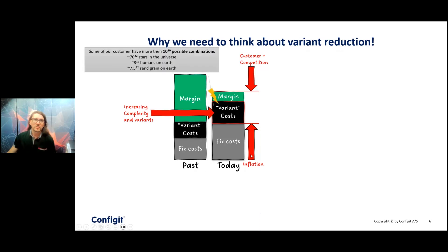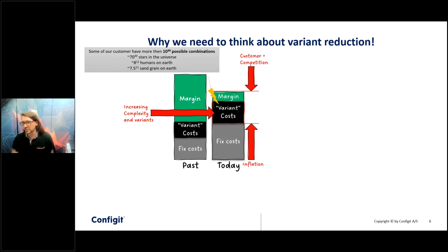Some of our customers have products with a complexity of 10 to the power of 30 possible combinations. If we compare that with numbers like stars in the universe or humans on earth, we shouldn't be surprised that we are not able to sell all possible combinations we have engineered. That means we have a large amount of variants that are never sold or never configured.